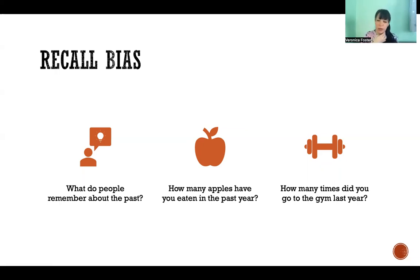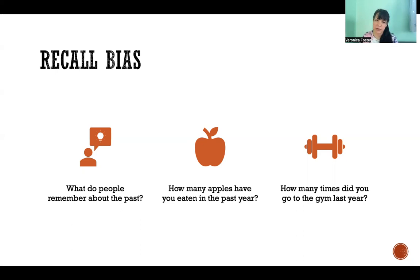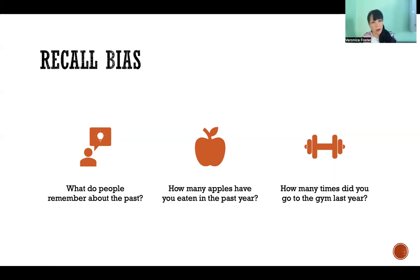Even if I ask you how many apples did you eat last year — unless the answer is zero because you don't like apples — you're not going to be able to give an accurate number. Or other behaviors, like how many times did you go to the gym last year? Unless the answer is zero or one or something really memorable, you're not going to be able to say.